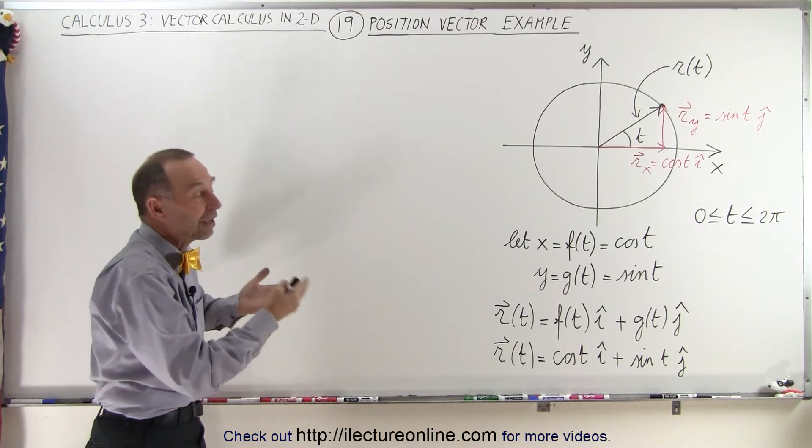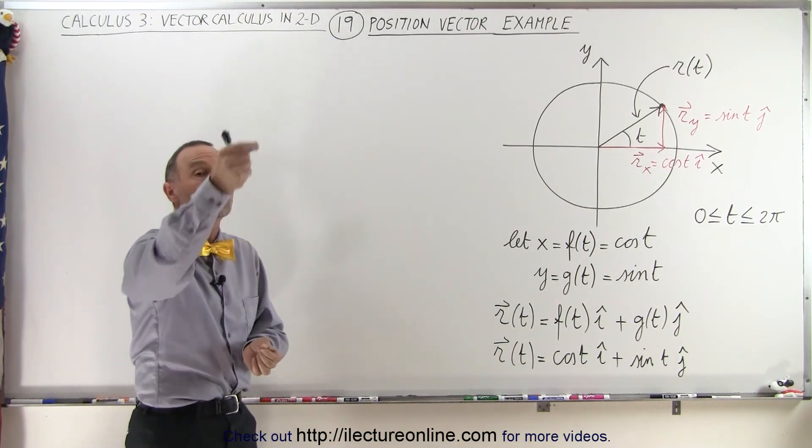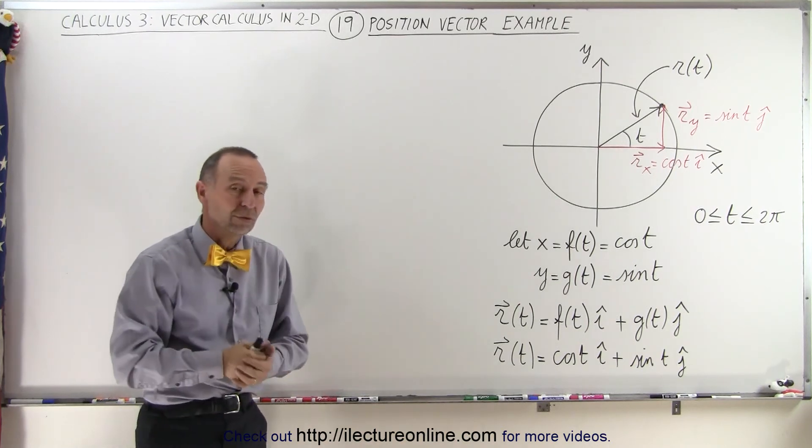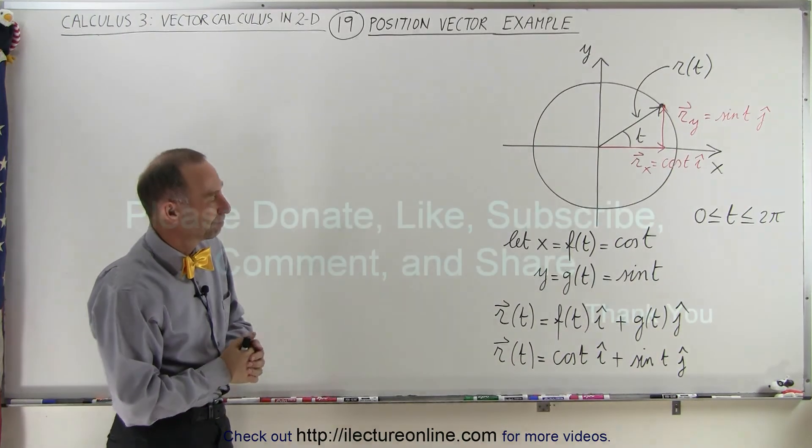So you can see there's a very nice example of how a position vector can simply show you where on the circle you are in terms of those parametric equations. And that's how it's done. Thank you.